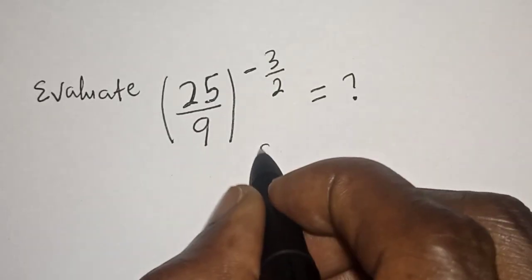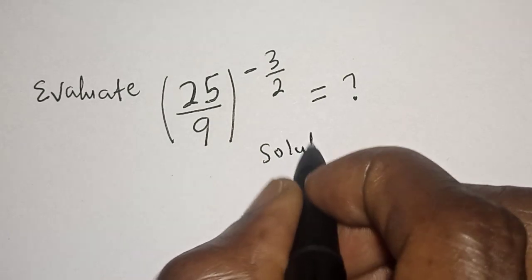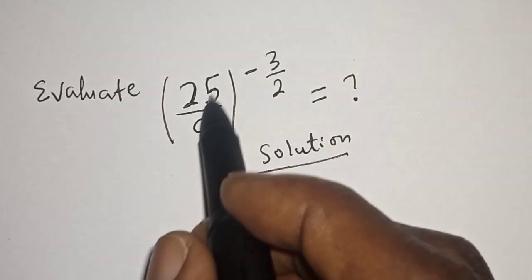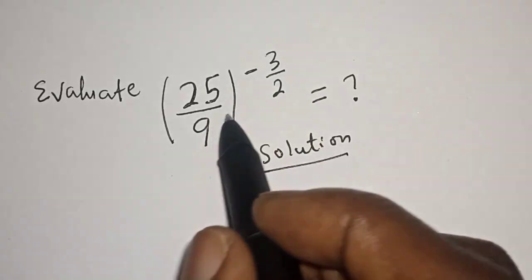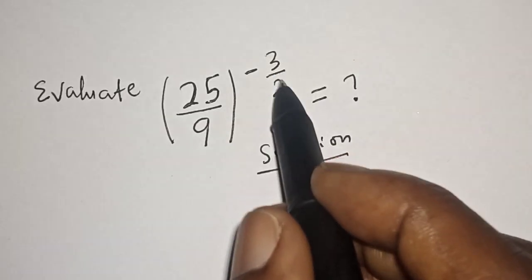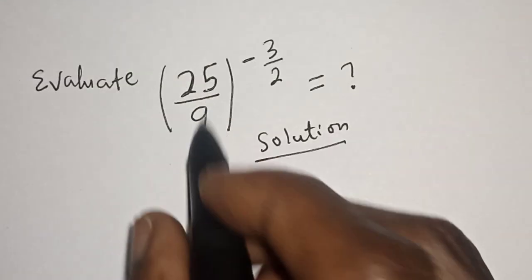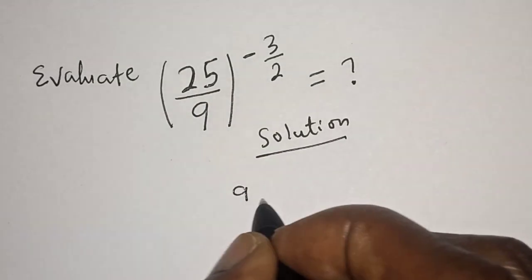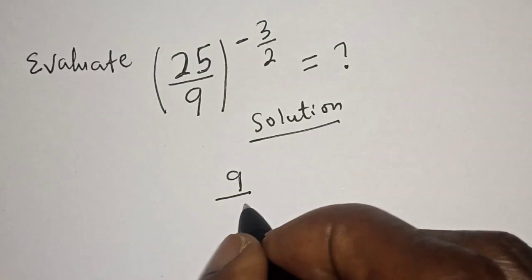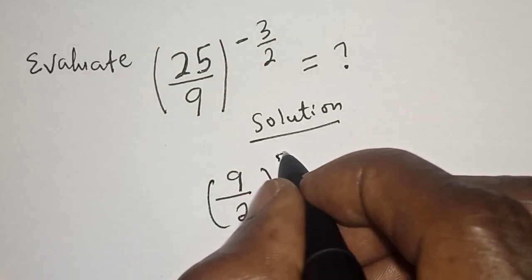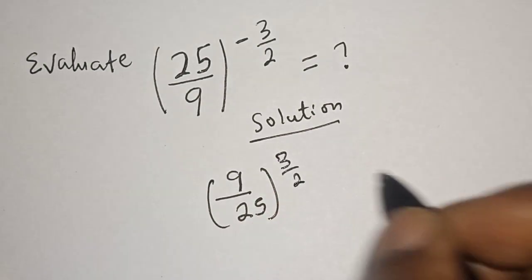Solution: We have 25 over 9, all to the power of minus 3 over 2. In order to change this negative exponent, this becomes 9 over 25, raised to the power of 3 over 2.